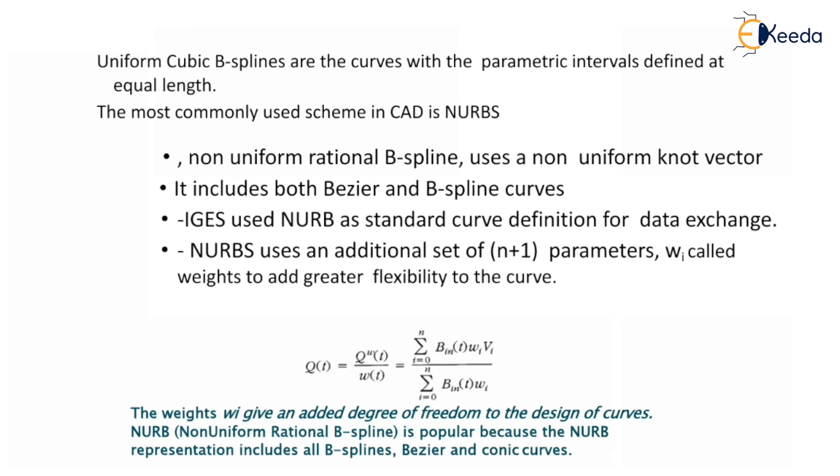Uniform cubic B-splines are the curves with the parametric intervals defined at equal length. The most commonly used scheme in CAD is NURBS, that is non-uniform rational B-spline. Non-uniform rational B-spline uses non-uniform knot vectors. It includes both Bezier curve and B-spline curves. IGES used NURBS as a standard curve definition for data exchange.